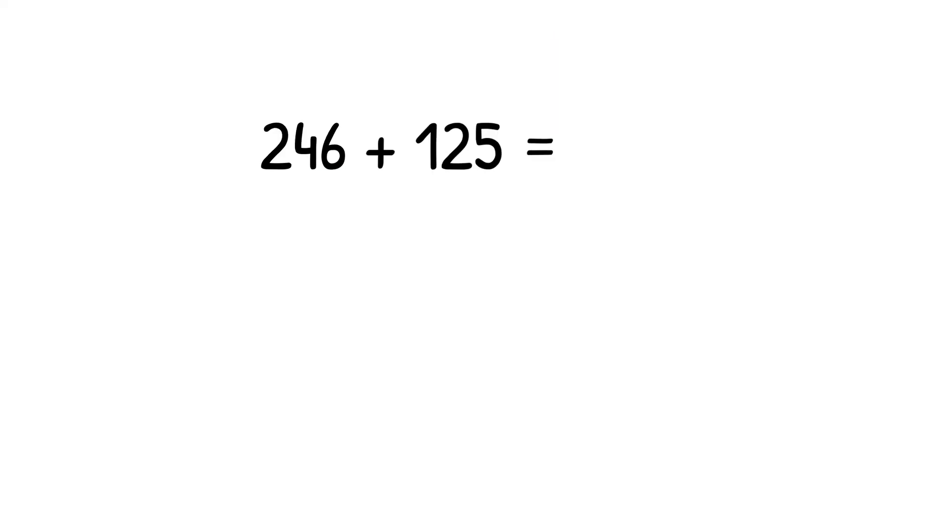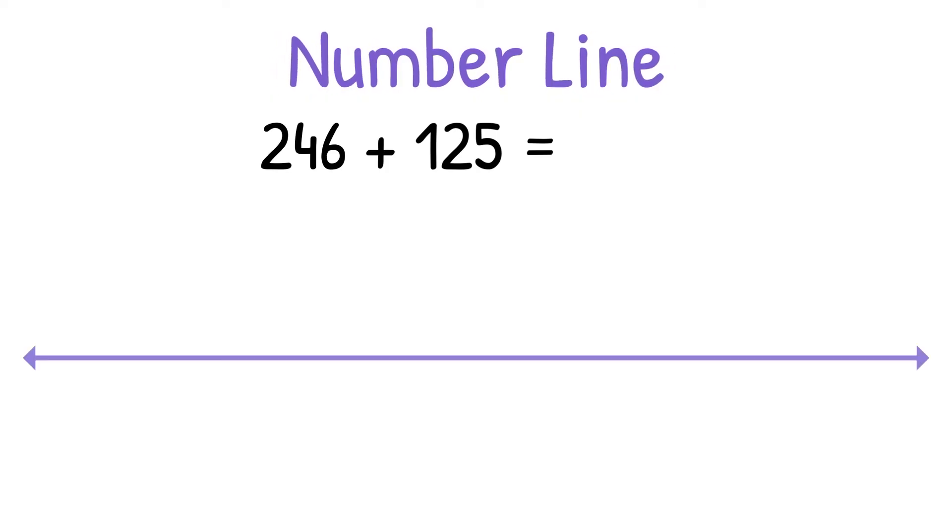Last, we will solve the same equation using the number line strategy. First you want to draw your open number line and start at 246. We're adding 125, so first we're going to make one big jump for the 100. This is where skip counting comes in handy. 246 plus 100 more equals 346.